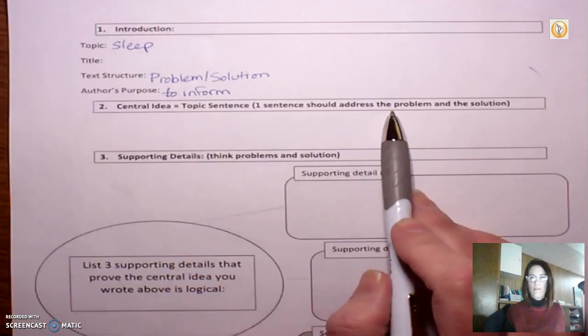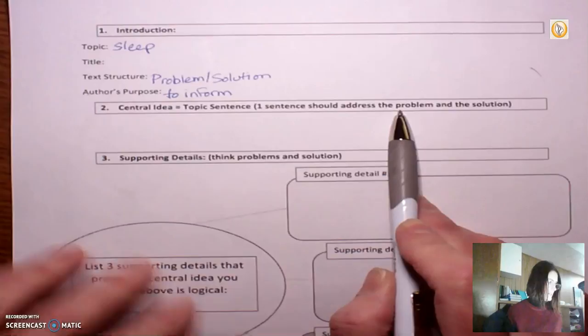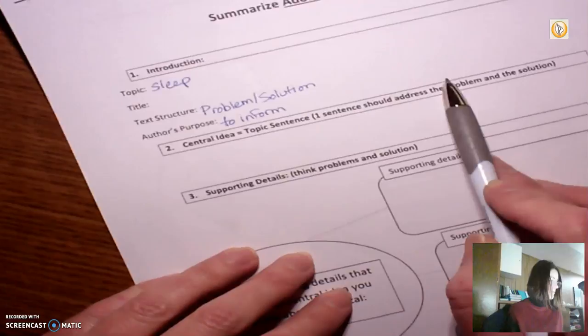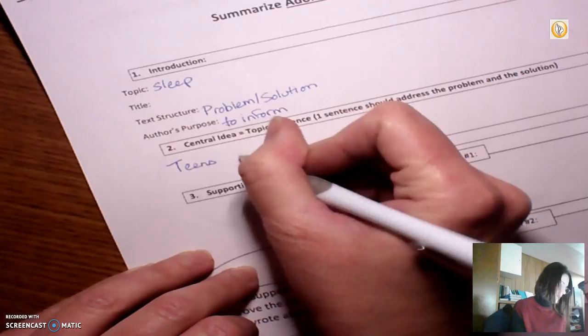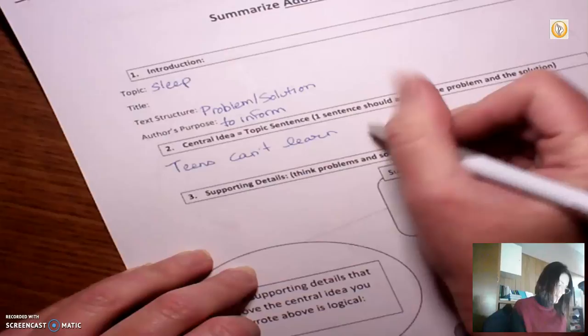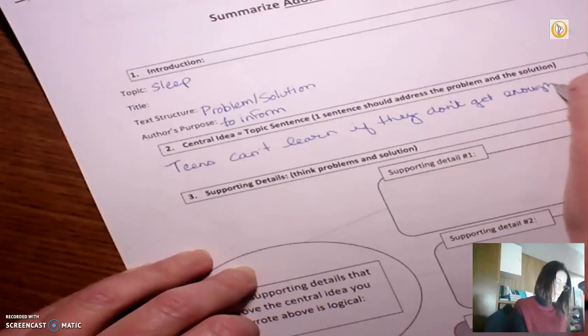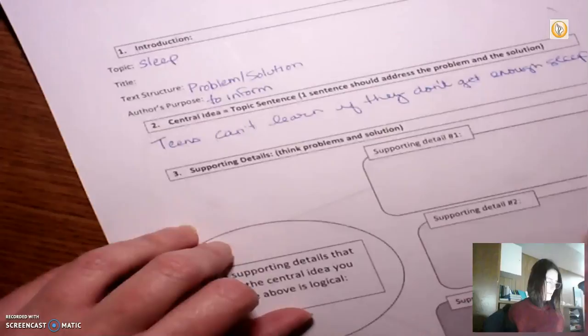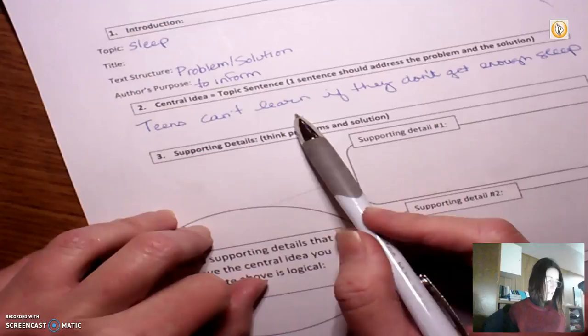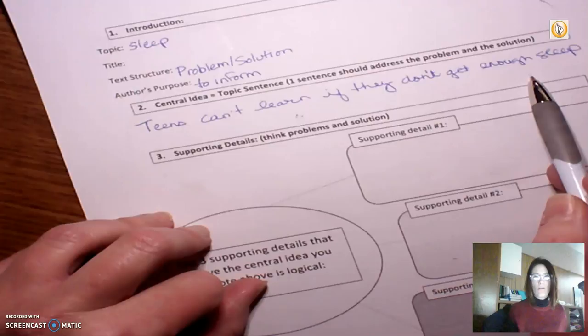I know that it should address the problem and the solution. So I think I'm going to start with the idea that, and I can always cross this out and start again if I find this isn't working for me. Let's say teens can't learn if they don't get enough sleep. Pretty simple and straightforward, right? We know that the problem is that teens cannot learn if they don't get enough sleep. And in terms of a solution, I don't know if I have to spell it out. It's inferred that when they do get enough sleep, it's easier for them to learn.